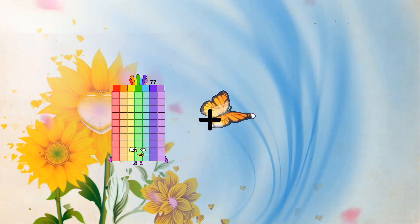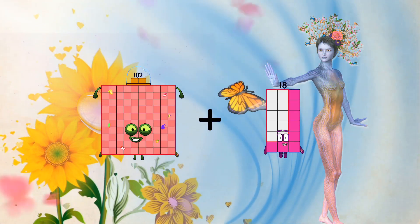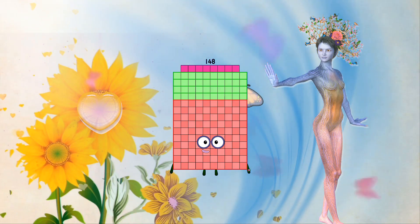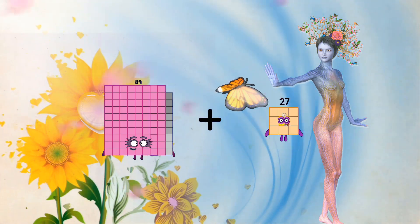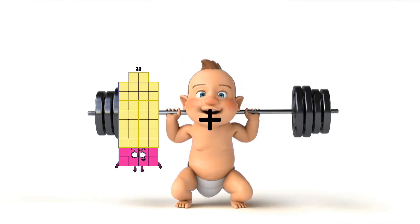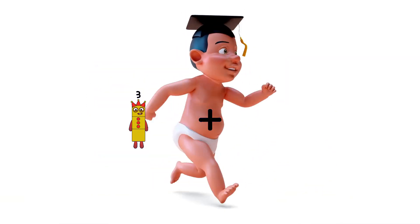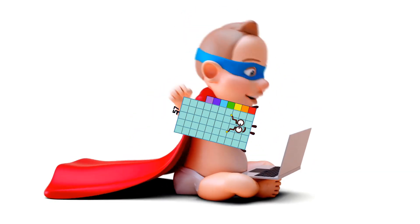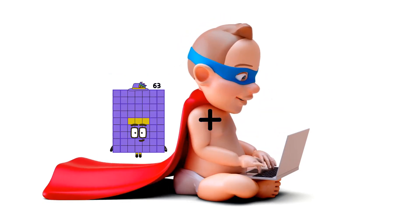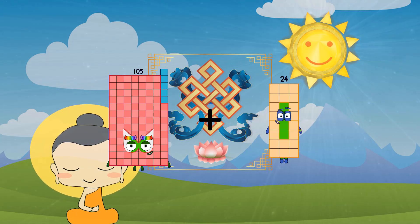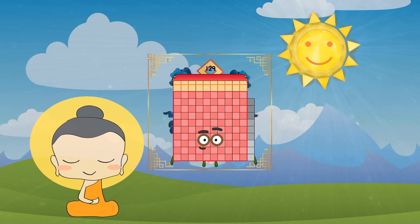102 plus 46 equals 148. 89 plus 102 equals 191. 3 plus 57 equals 60. 105 plus 24 equals 129.